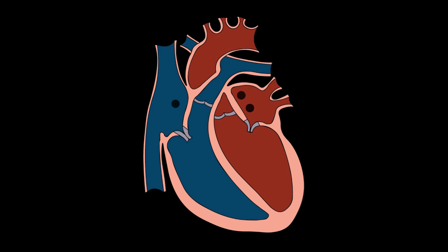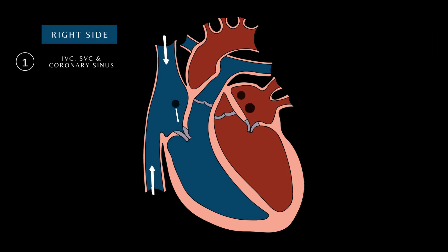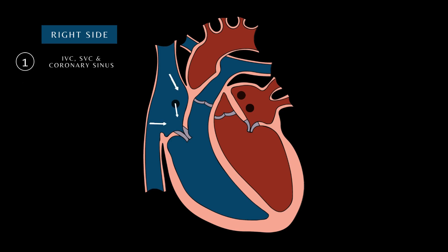Now let's look at the way blood flows through the heart. First, deoxygenated blood leaves the systemic circulation via the superior vena cava, the inferior vena cava, and the coronary sinus, and drains into the right atrium.